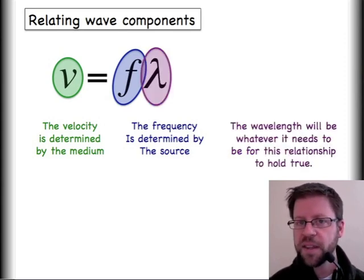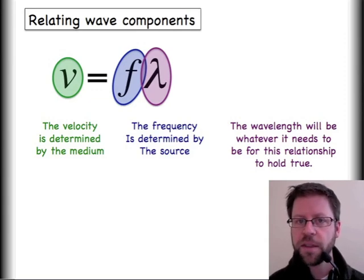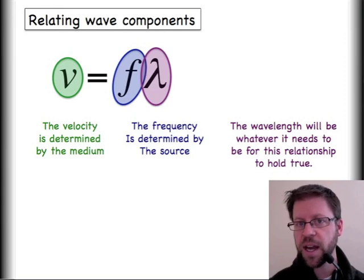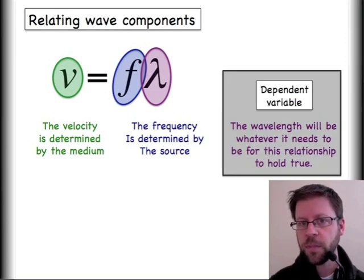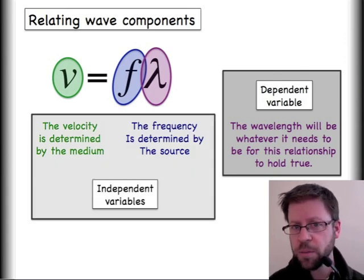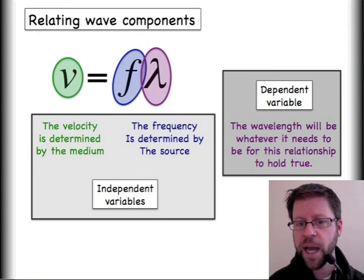Lambda is going to be the thing that you actually use this math equation for. So we would say it is the dependent variable. It depends on whatever the other two parameters were so that this math equation can actually hold true. So I've labeled it as the dependent variable there.